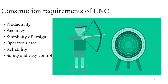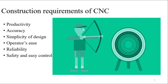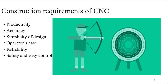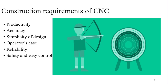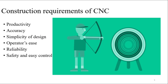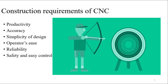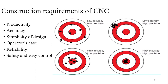So what are the construction requirements of CNC? What do you want from the CNC? You want your productivity to increase. Then we need accuracy — the accuracy of your machine should be very high, it should be perfect. Some of you may not know what accuracy means, so I would say this is the chart through which you can easily understand accuracy.